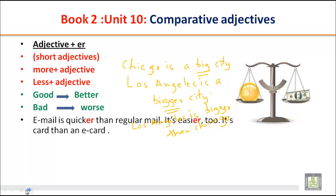So we can compare two things. Like good, better — if you say my friend Atif is good, but Fahad is better. Bad, worse — like Samsung mobile is bad, but LG is worse. Let's look at this example: email is quicker than regular mail.